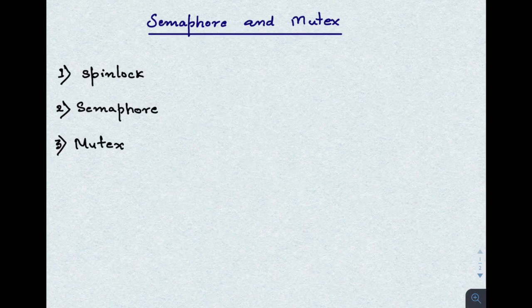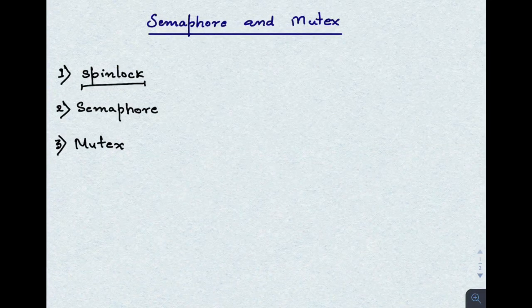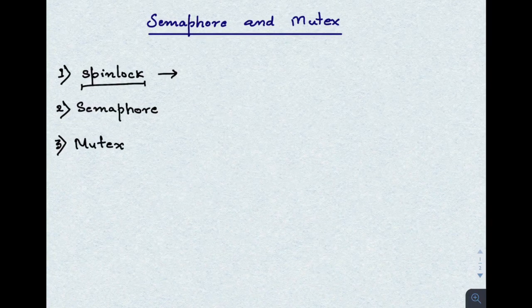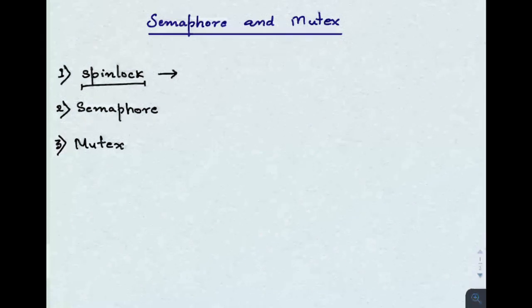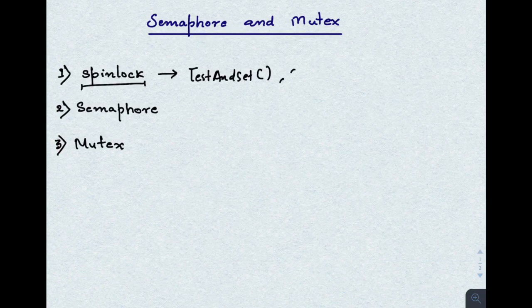Hello friends, in this video we are going to look at semaphore and mutex, which are used for process synchronization. We already had a look at spin lock solutions, and we already saw that Peterson's solution has a problem running on multiple processors. The solutions were test-and-set and swap — these are the hardware solutions.